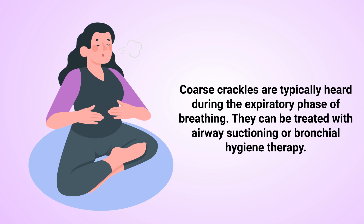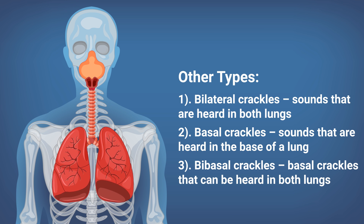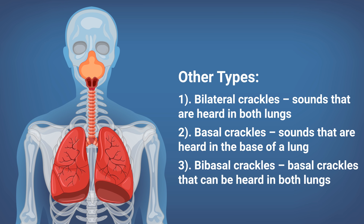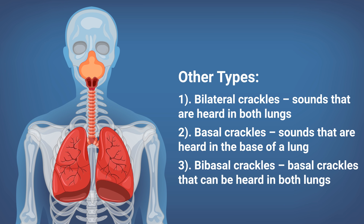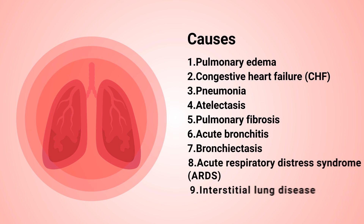Coarse crackles can be treated with airway suctioning or bronchial hygiene therapy. Some other types of crackles include bilateral crackles, which are sounds heard in both lungs; basal crackles, which are sounds heard in the base of the lung; and bibasal crackles, which are basal crackles heard in both lungs.